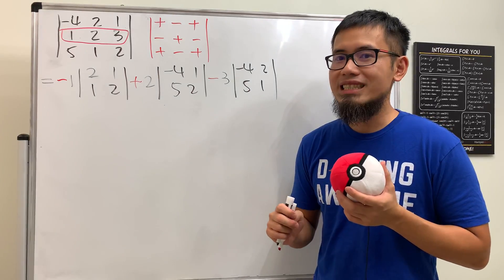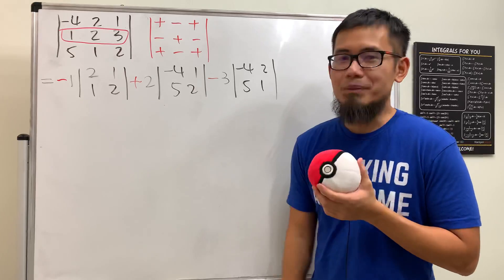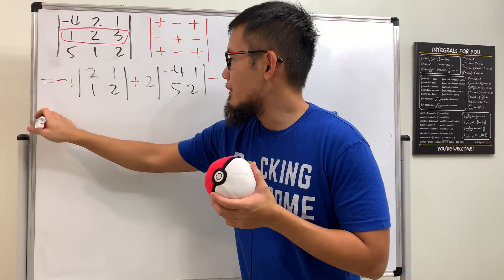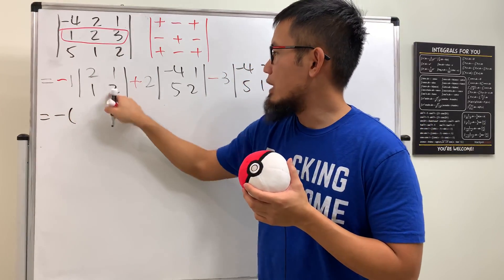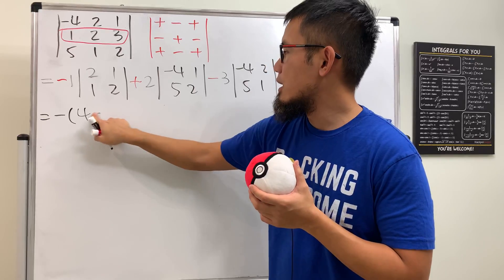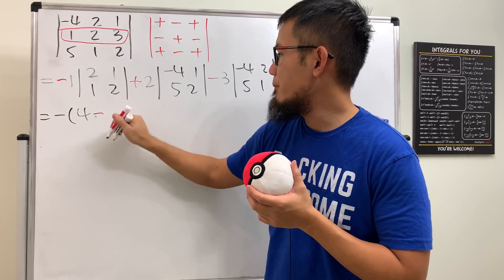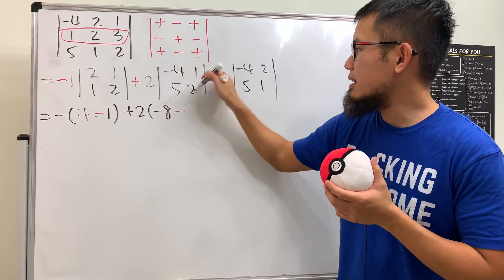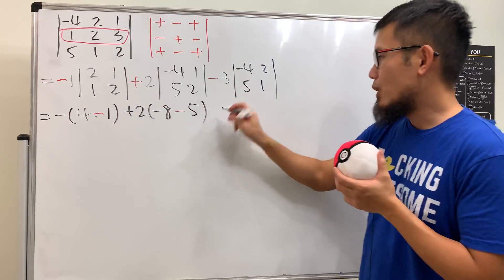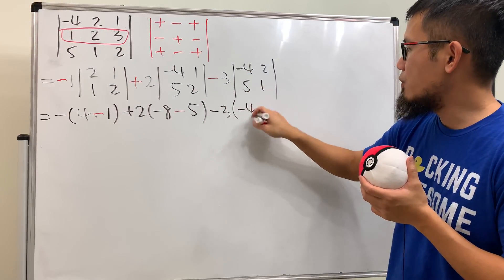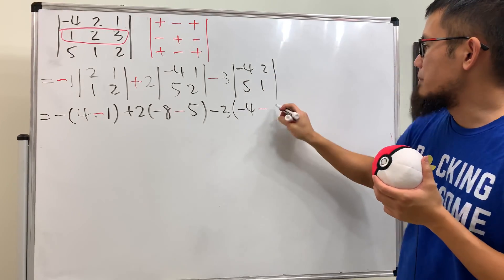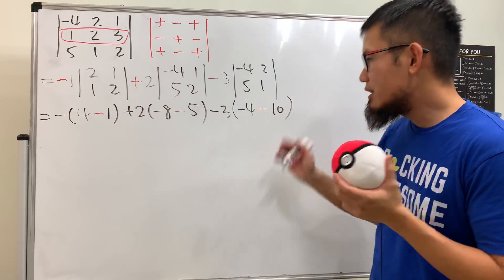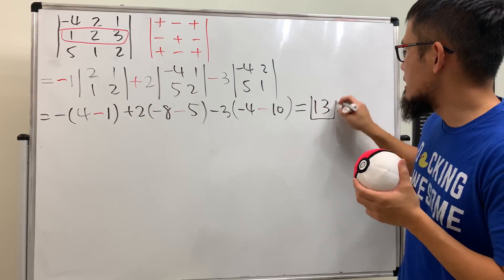For a two by two determinant, it's just this times this minus that times that. So for the first one: negative one times (two times two minus one times one) = negative one times (4 minus 1). Then plus two times (negative eight minus five). Then minus three times (negative four minus ten). Combining everything, we end up with positive 13.